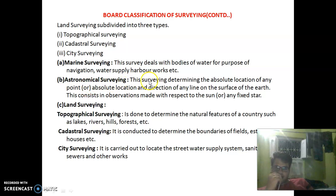Astronomical Survey determines the absolute location of any point and direction of any line on the surface of the Earth.